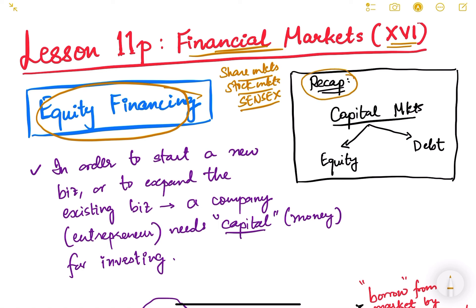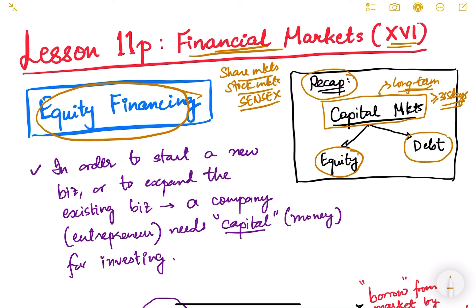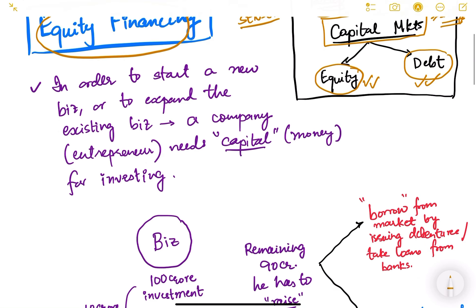Before we start, let us do a quick recap. We are currently studying capital markets, which are long-term instruments markets — long-term meaning instruments with a tenure of more than or equal to 365 days. Within capital markets there are two types: the debt market and the equity market. We have already studied the debt market, and now we are going to start the equity markets.